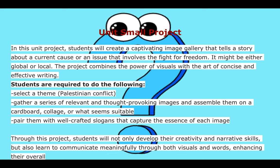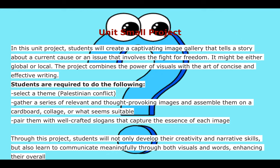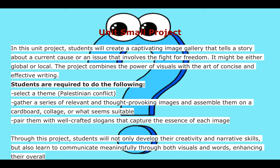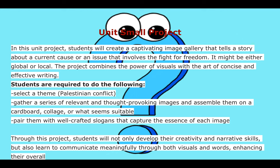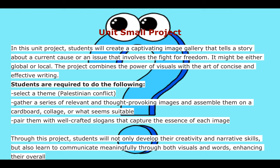We have a small project in this unit, also about freedom. In this unit project, you will create a captivating image gallery that tells a story about a current cause or issue involving the fight for freedom — either global or local. The project combines the power of visuals with the art of concise and effective writing. You will select a theme — for example, the Palestinian conflict if local, or Ukraine versus Russia if global. You will gather relevant and thought-provoking images and assemble them on a cardboard collage or suitable format, paired with well-crafted slogans that capture the essence of each image. Through this project, students will develop their creativity and narrative skills and learn to communicate meaningfully through both visuals and words.